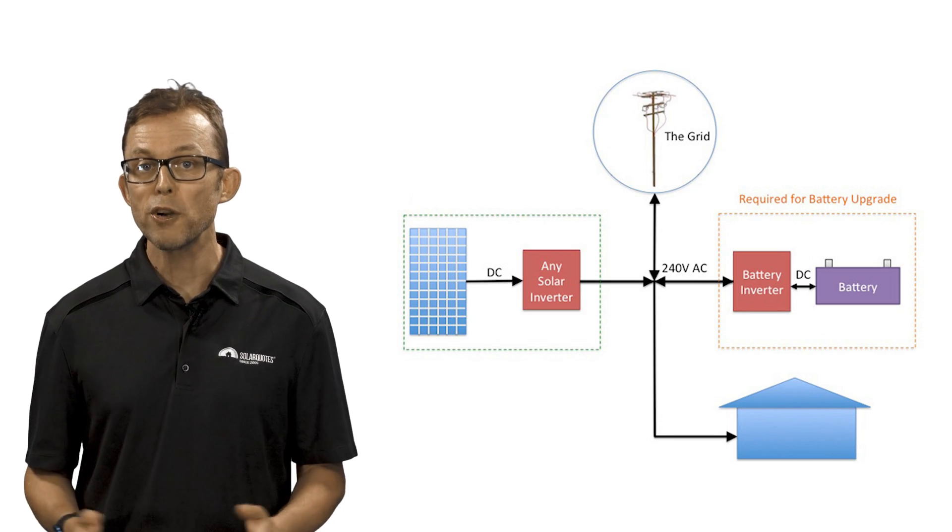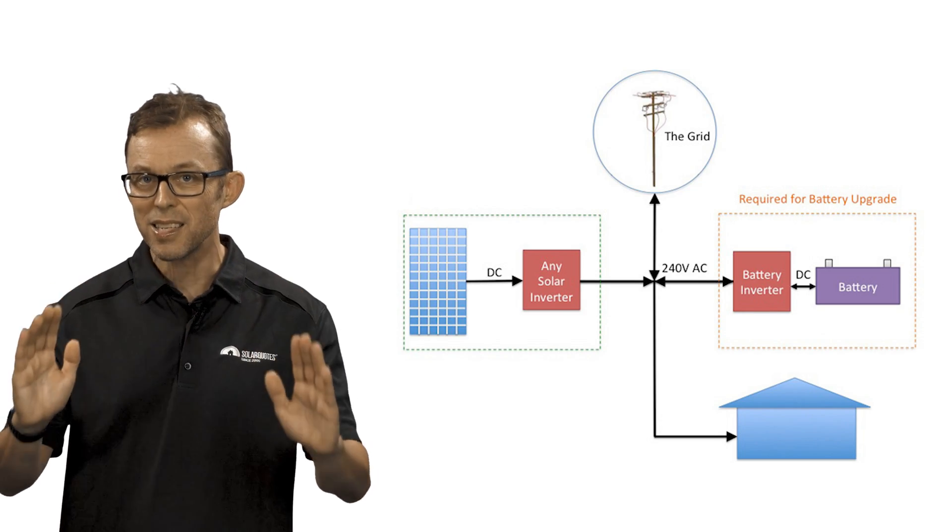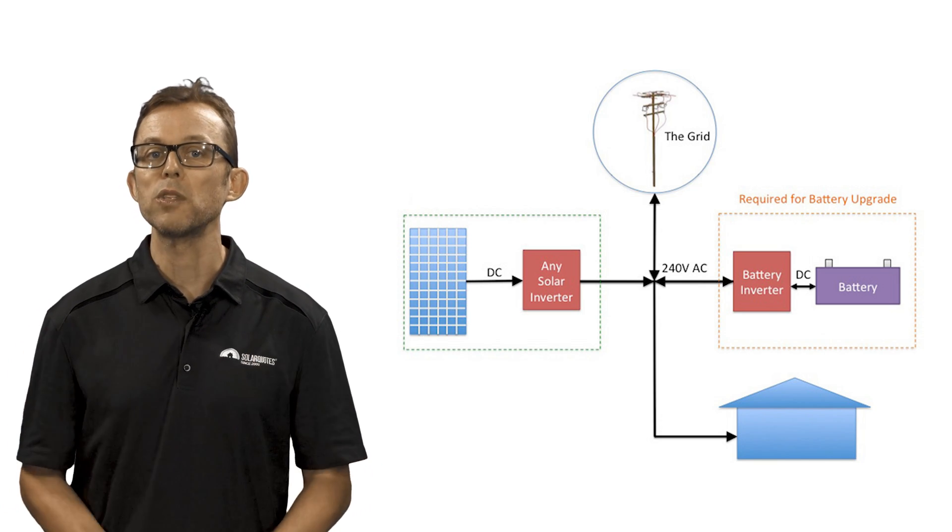Now let's talk about solar inverters and adding batteries. Batteries are great for lots of things but they are still expensive. So many people want to buy a battery-ready solar system that they can add batteries to once they've come down in price a bit. The bottom line is when you use a method known as AC coupling, you can retrofit batteries to any existing solar system regardless of what inverter you have.